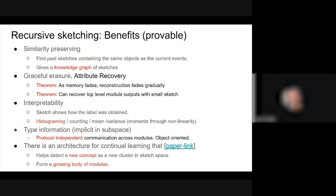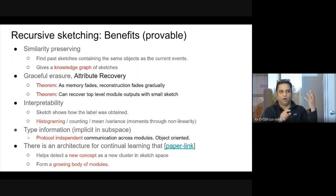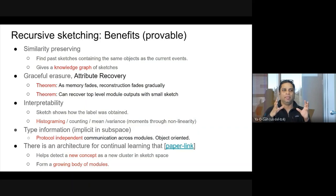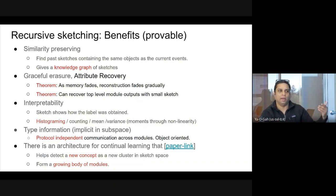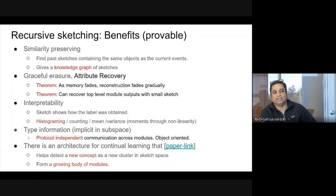On how modules are created: when you find a new region in sketch space that is suddenly being hit — events are forming which cluster like 'tigers' — you know you need to form a new module. Using locality sensitive hashing, that corresponds to a bucket, and in that bucket you allocate a module like a small deep network. The deep network is trained to, for example, remember how the tiger behaves, or predict masked portions of the tiger — using both unsupervised and supervised learning to understand that concept better.